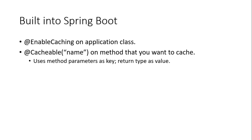This is easy to do in Spring Boot — so easy we'll do it right now. First, on the application class, we need the @EnableCaching annotation. Then on the method that we want to cache, we use @Cacheable. We can use the method parameters as the key, and essentially the return type is the value that gets returned from the cache.